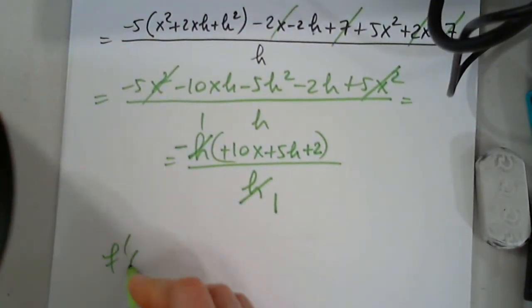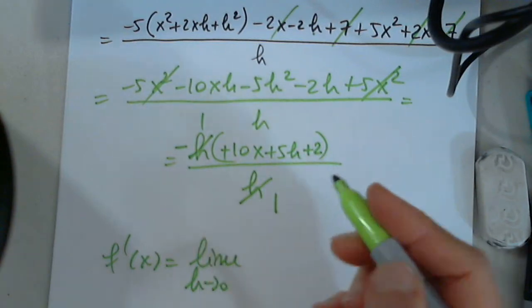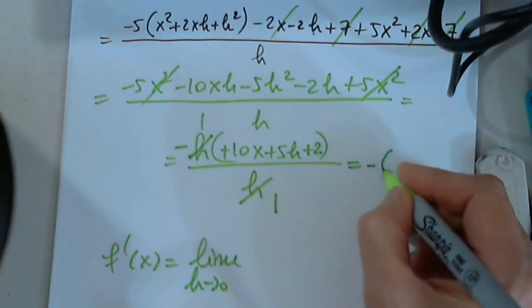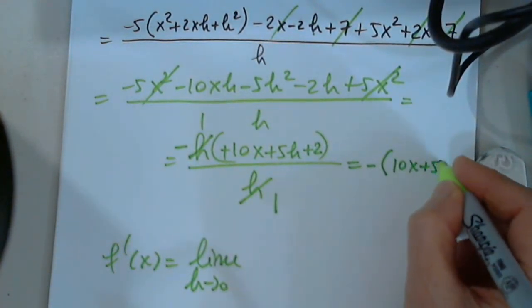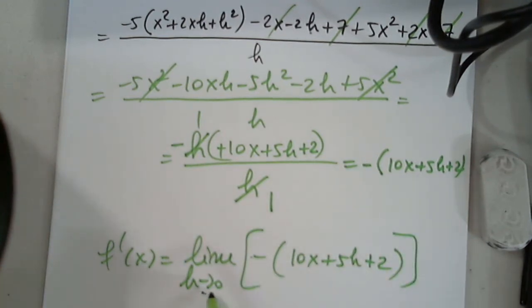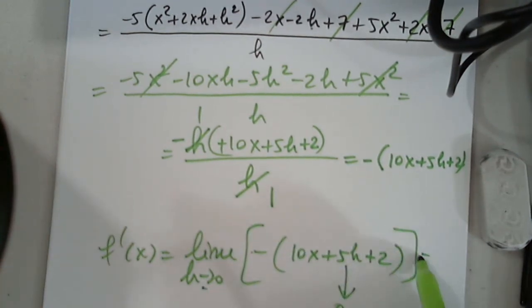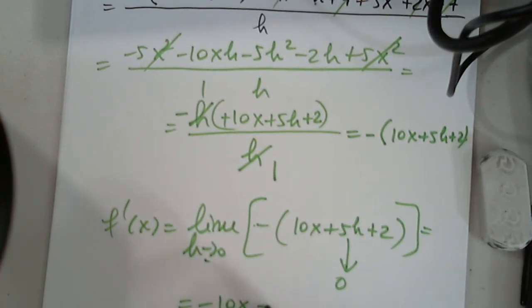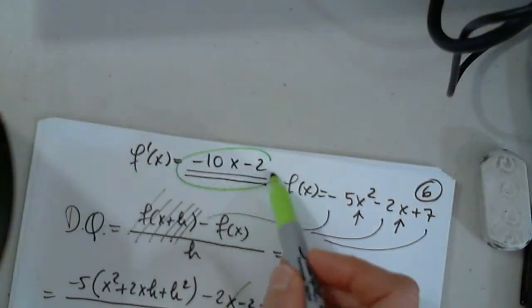And now, to find f prime with the definition, I have limit as h approaches 0 from this. Let me write it here one more time. Negative 10x plus 5h plus 2 from this. When h approaches 0, this approaches 0. So the answer is as expected, what I got 5 minutes ago.